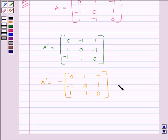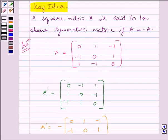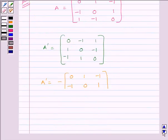We can see this matrix is exactly the same as matrix A. So we can write A transpose equals minus A. Now, since A transpose equals minus A, the given matrix A is a skew symmetric matrix.